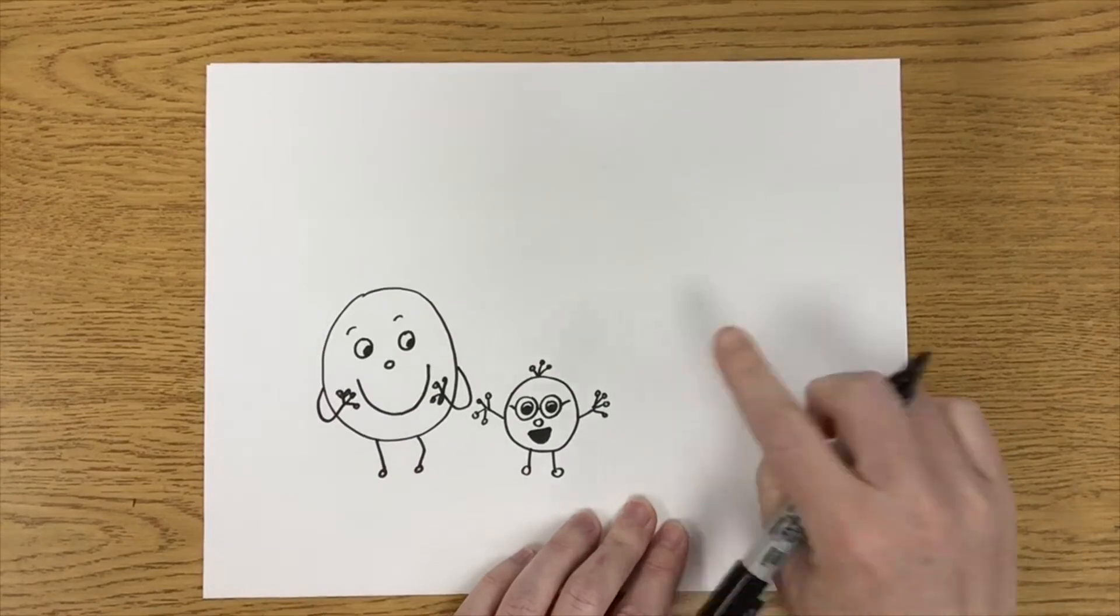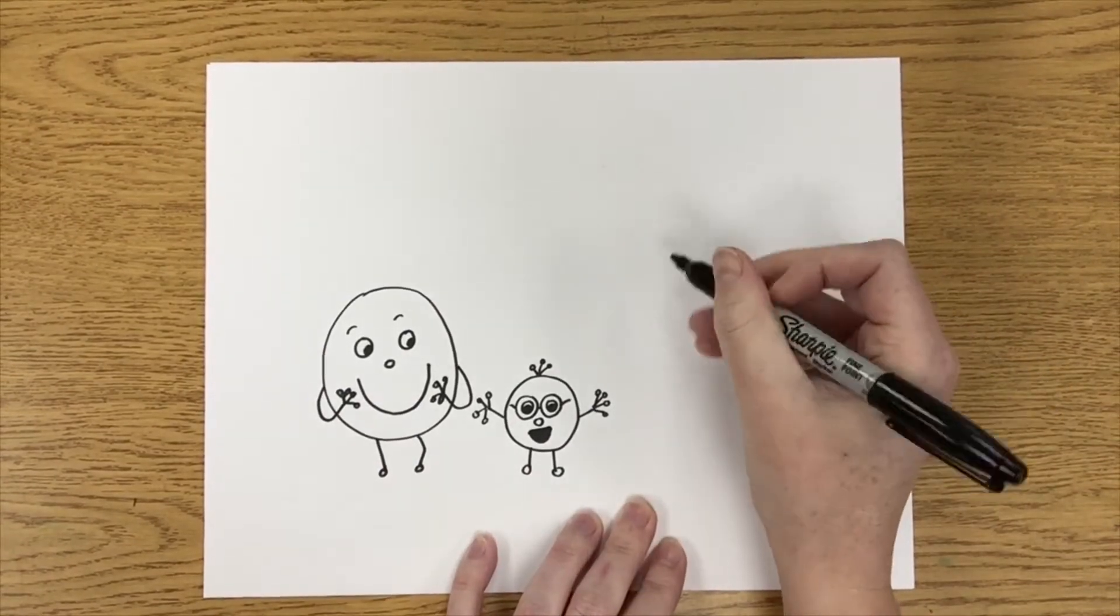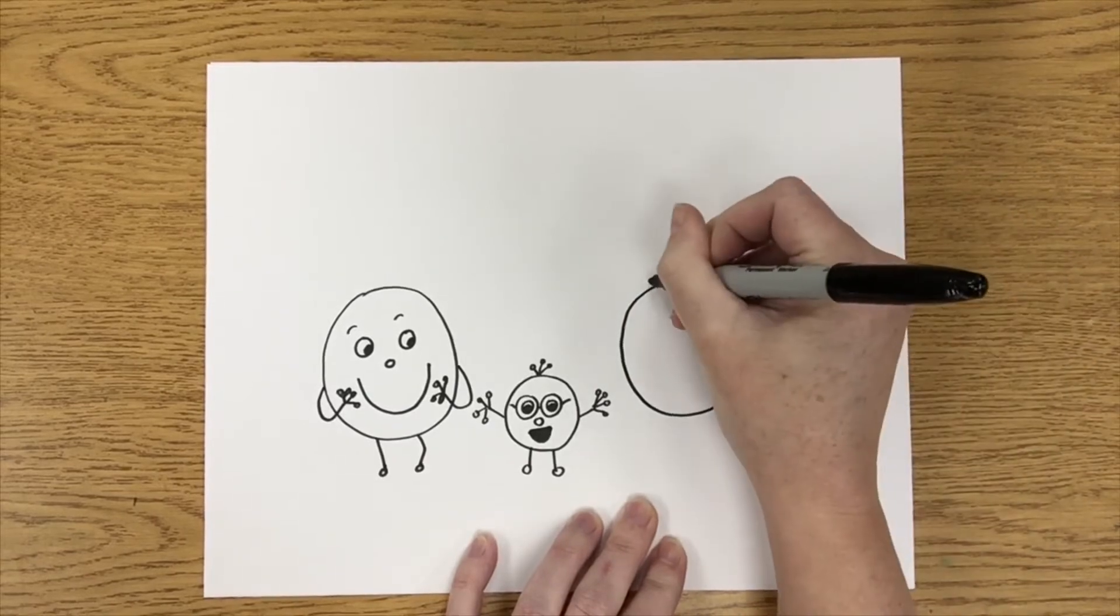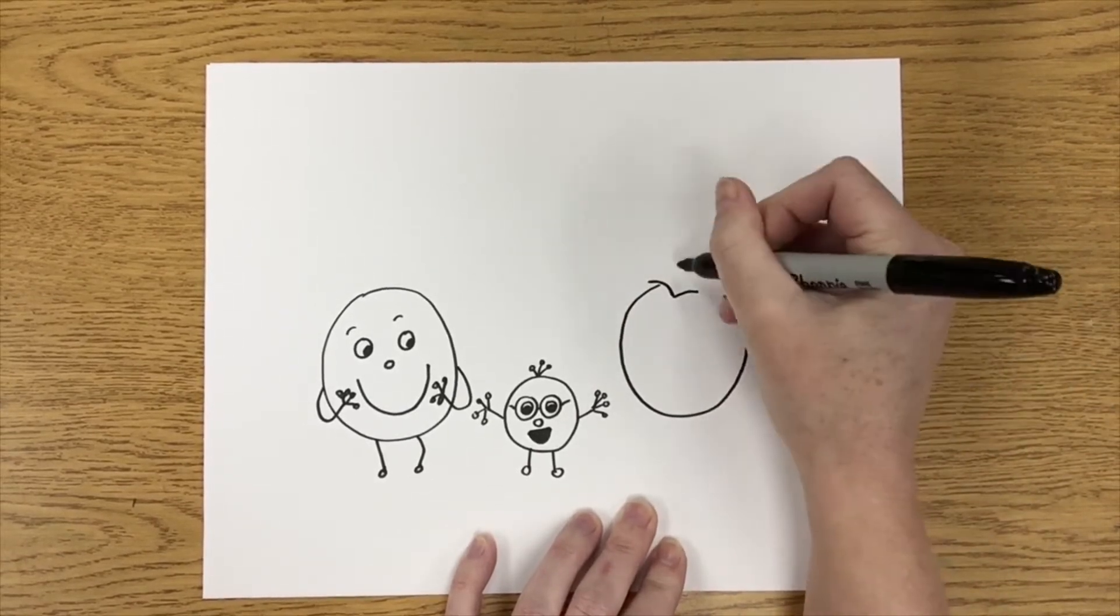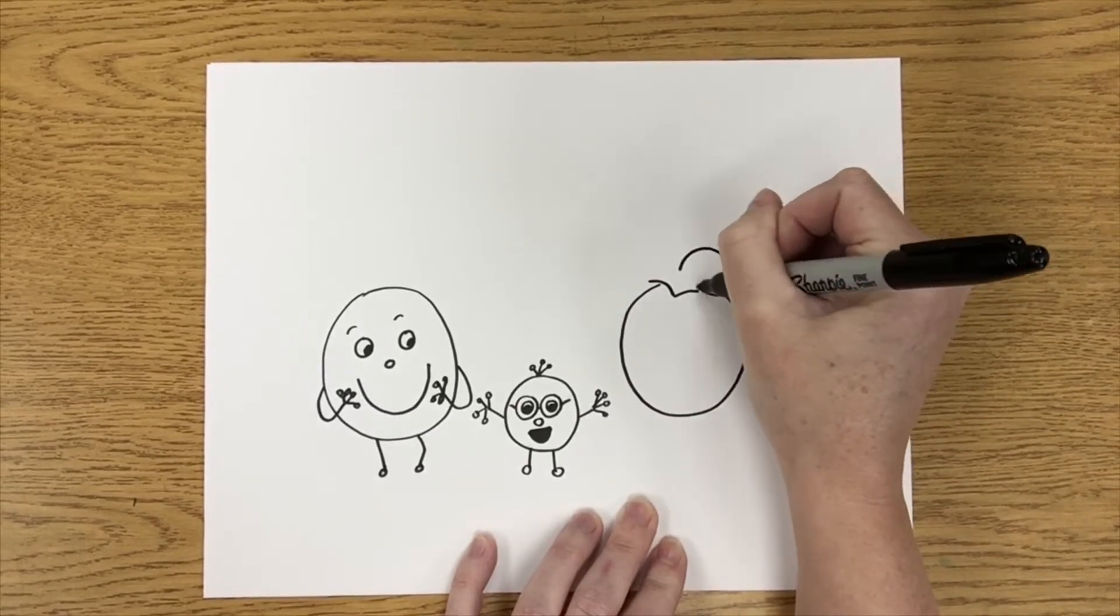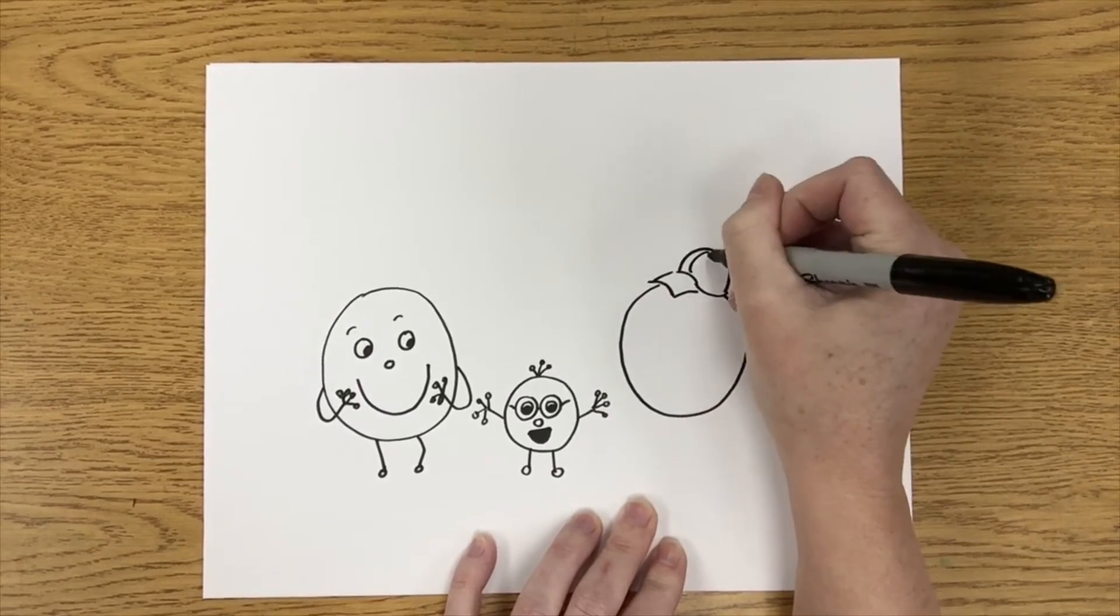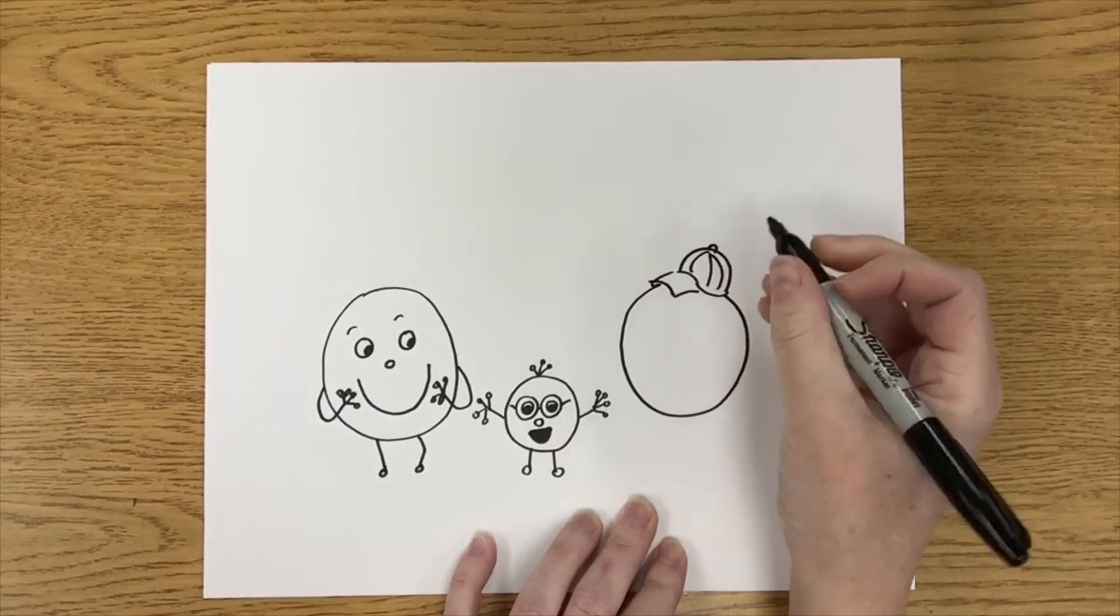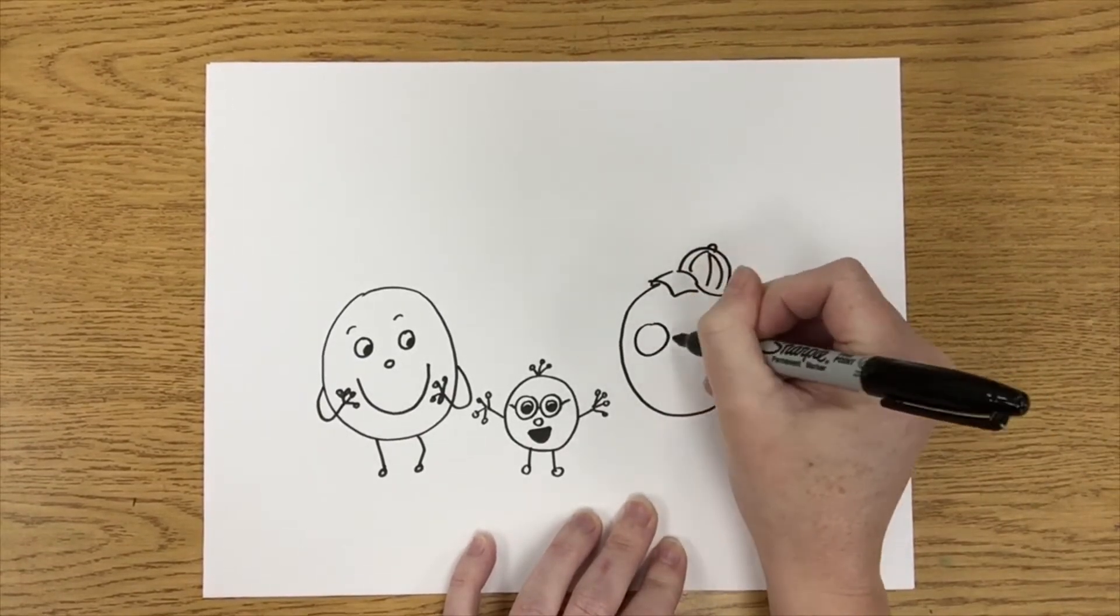All right, and one more over here. All right, I think I'm going to make this one wearing a hat, so I'm going to leave that space. And maybe he has glasses too.